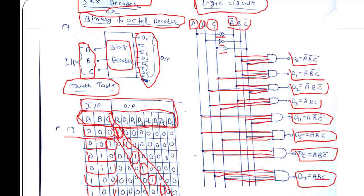Here you can see that our input is binary data — we are giving binary input and getting octal output, so this decoder is also known as a binary-to-octal decoder. In the next lecture we will discuss about encoders. Thank you, have a nice day, bye.